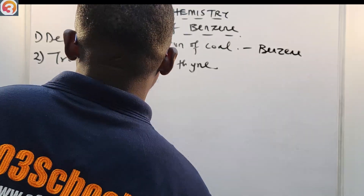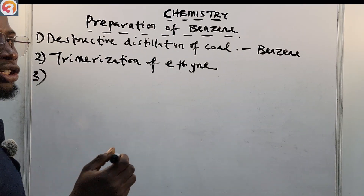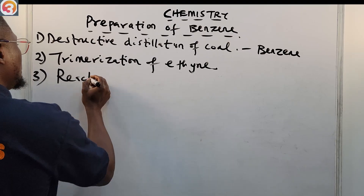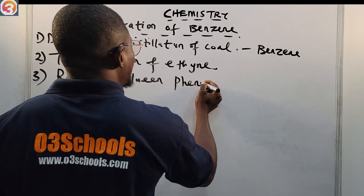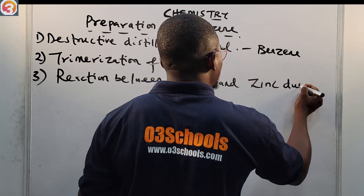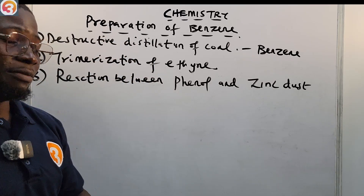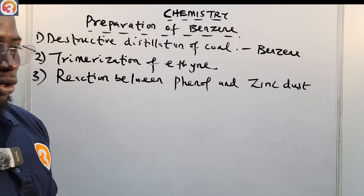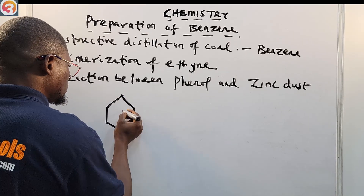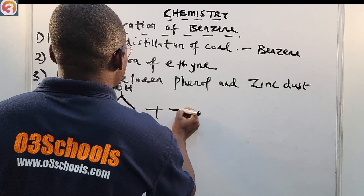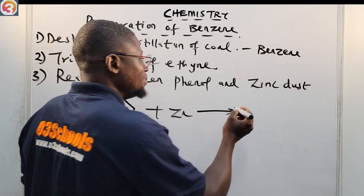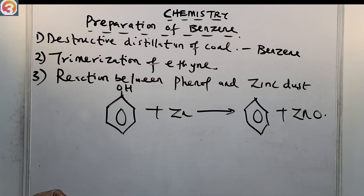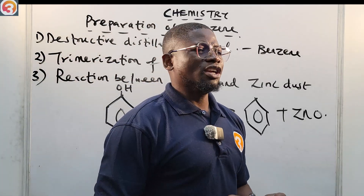The third method of preparing benzene is by reacting phenol with zinc dust. Phenol is a benzene ring that has an OH group attached. When phenol reacts with zinc dust, it gives us benzene. The reaction is: phenol (benzene ring with OH) plus zinc dust gives a benzene ring plus zinc oxide (ZnO).